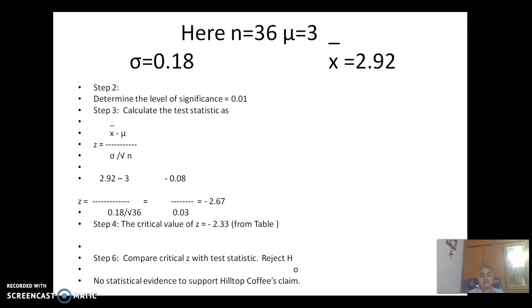So the tabular value, the z critical value is minus 2.33. This is a left tail test. Next step is we compare the critical value with the calculated value. The calculated value is 2.67. The critical value is 2.33. So the calculated value is greater than the critical value. We reject the null hypothesis H0.